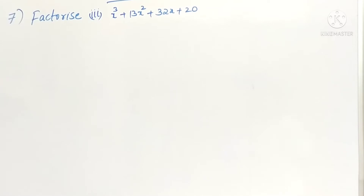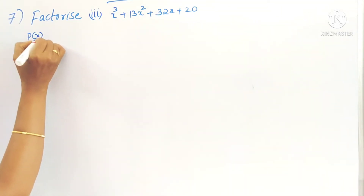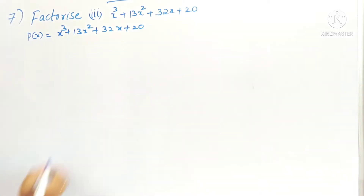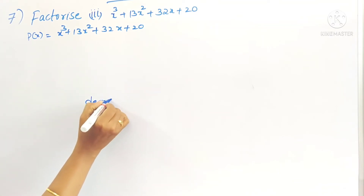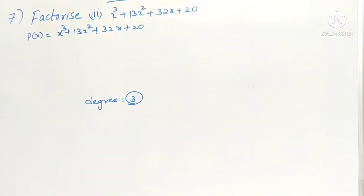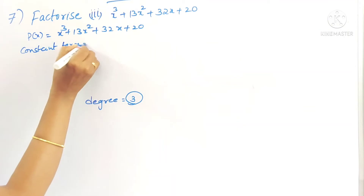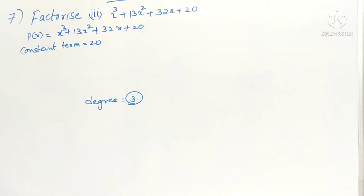Hello students, welcome to my channel. Today in this video we are going to see the solution of problem 7 in exercise 2.4: factorize x³ + 13x² + 32x + 20. So write p(x) as the given polynomial. The degree is the highest power, which is 3, meaning this polynomial has 3 factors. To find them, take the constant term — the number without any variable x — which is 20.